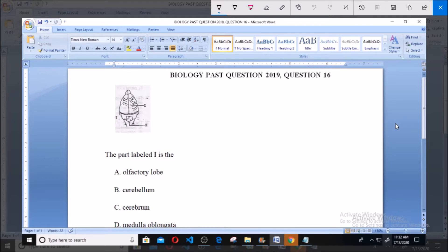The part labelled I in the diagram is a olfactory lobe, b the cerebellum, c the cerebrum, and d the medulla oblongata. Now firstly you have to identify the diagram that was being drawn.